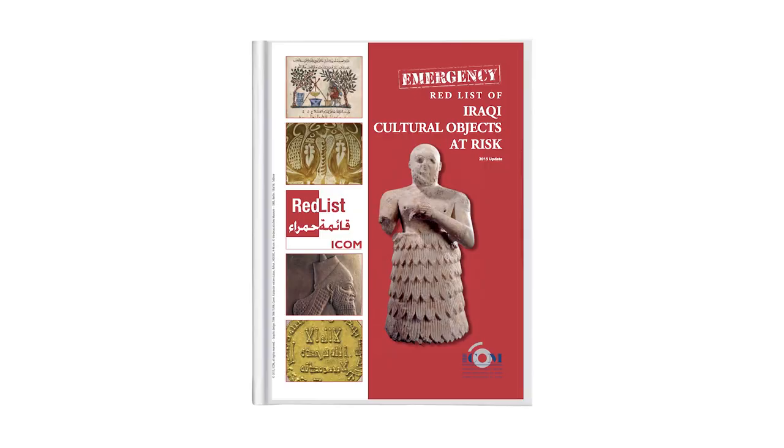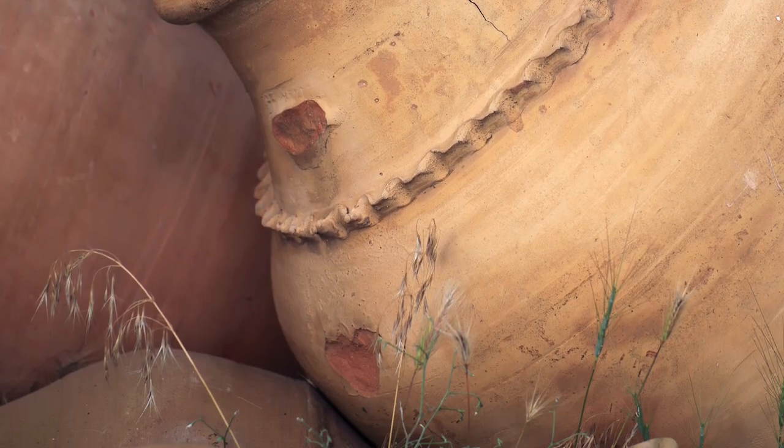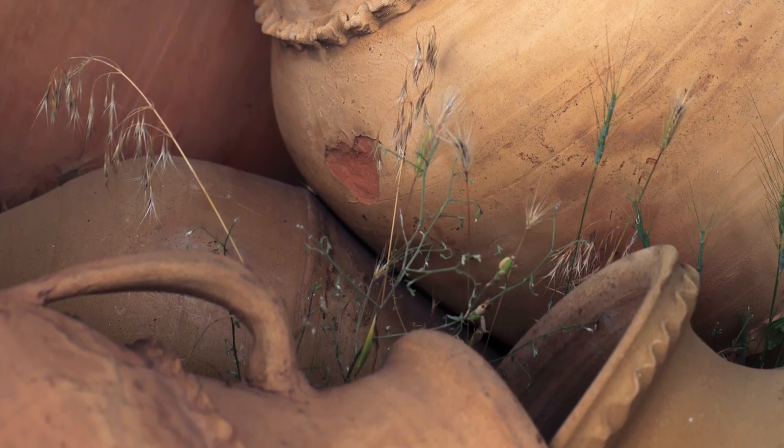One good example of the work of the Observatory is the Red List database for Iraqi cultural objects at risk. The fight against illicit traffic requires the development of legal instruments together with a serious raising of public awareness. The dissemination of the right information and the increase of awareness of the importance of cultural heritage can somehow help to prevent destruction and looting.